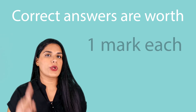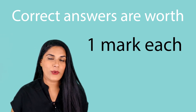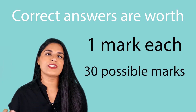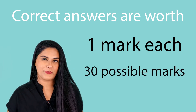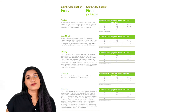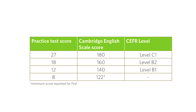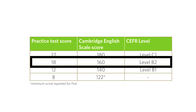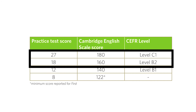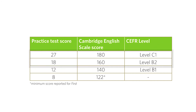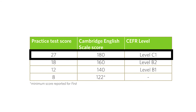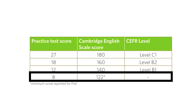Listening — this is probably the easiest one to mark. All correct answers in the listening paper are worth one mark each. There are 30 questions in the listening exam, so there are 30 possible marks. Use this table to find out your score. You need a minimum of 18 marks to get a B2 level in listening. Anything between 18 and 27 is B2 level, and anything above 27 is C1. If you achieve 8 or fewer marks, your performance is below B1 level.